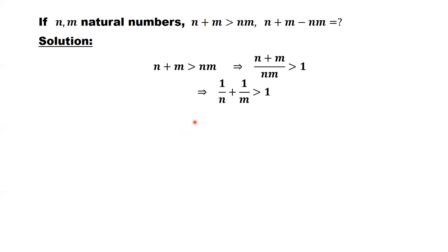We claim at least one of them is 1. Otherwise, if both numbers are bigger than or equal to 2, we will find a contradiction. So here, if both numbers are bigger than or equal to 2,